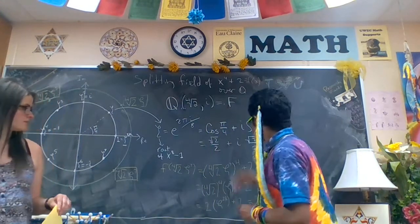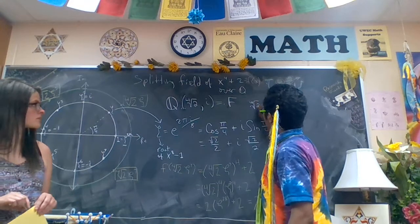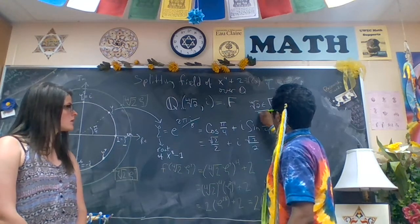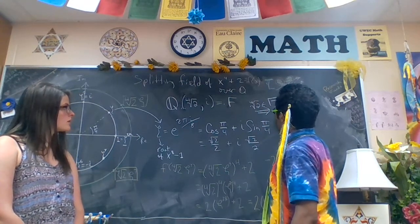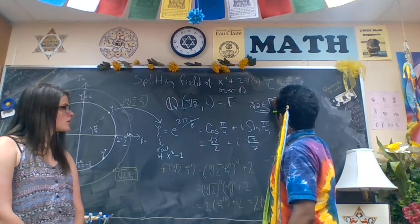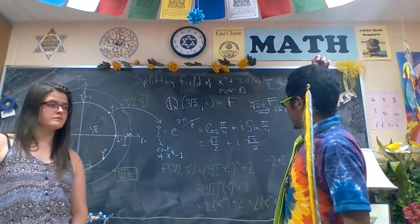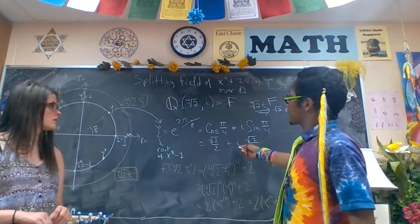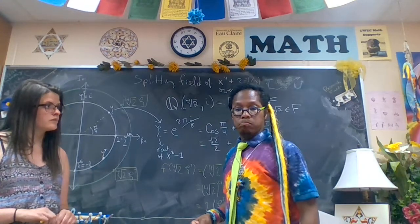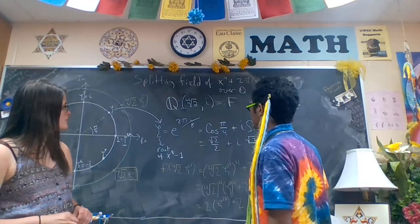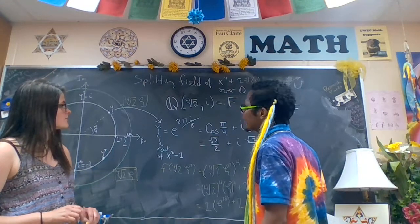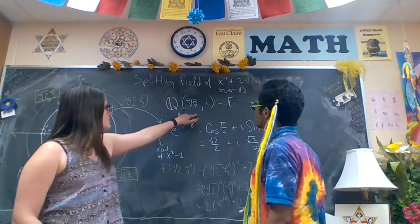So, if 4th root of 2 is in f, then surely square root of 2 is also in f. And then, all we also need is i. Is there anything more to say? I think we've got our splitting field. So, this is the splitting field.